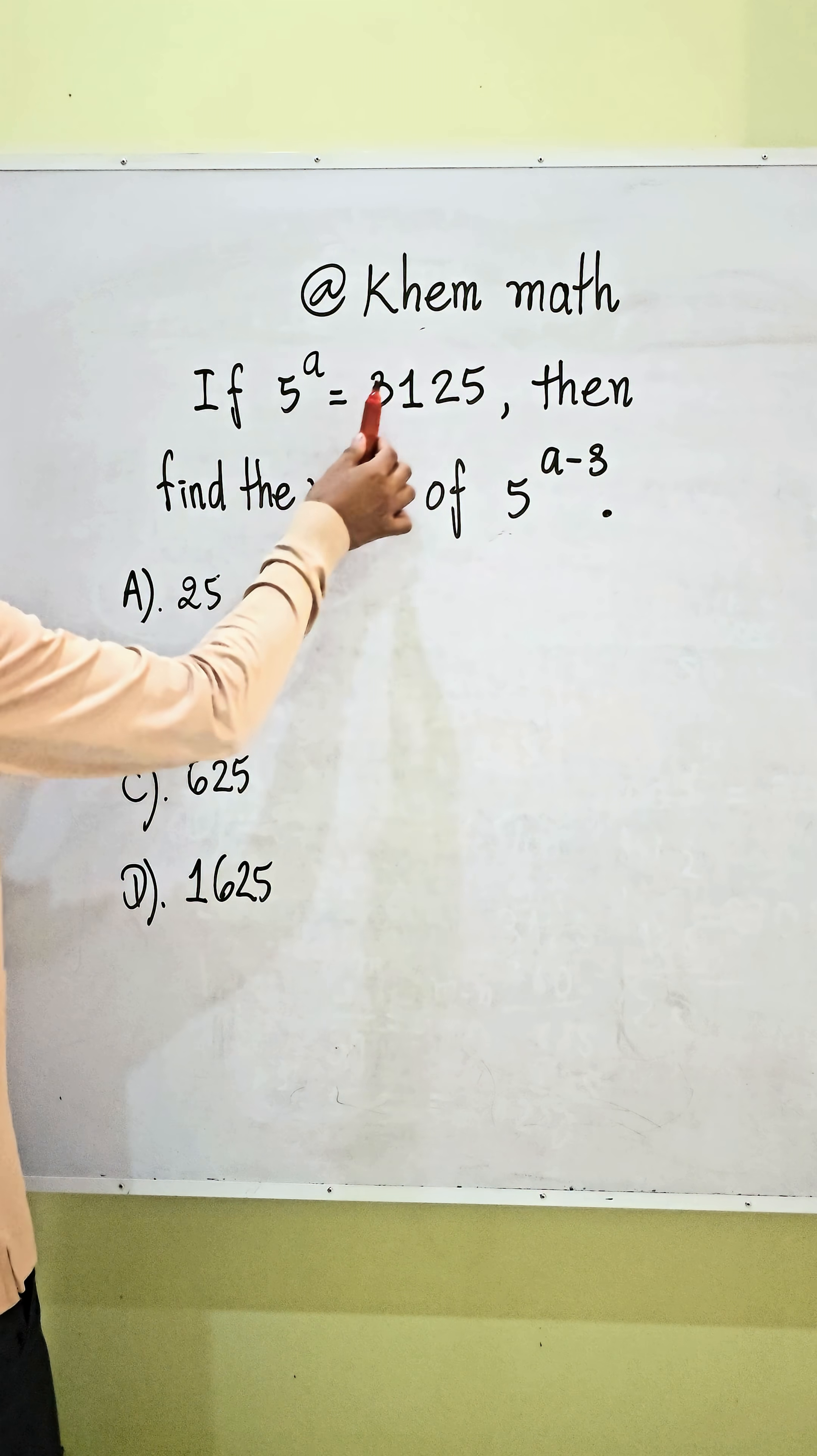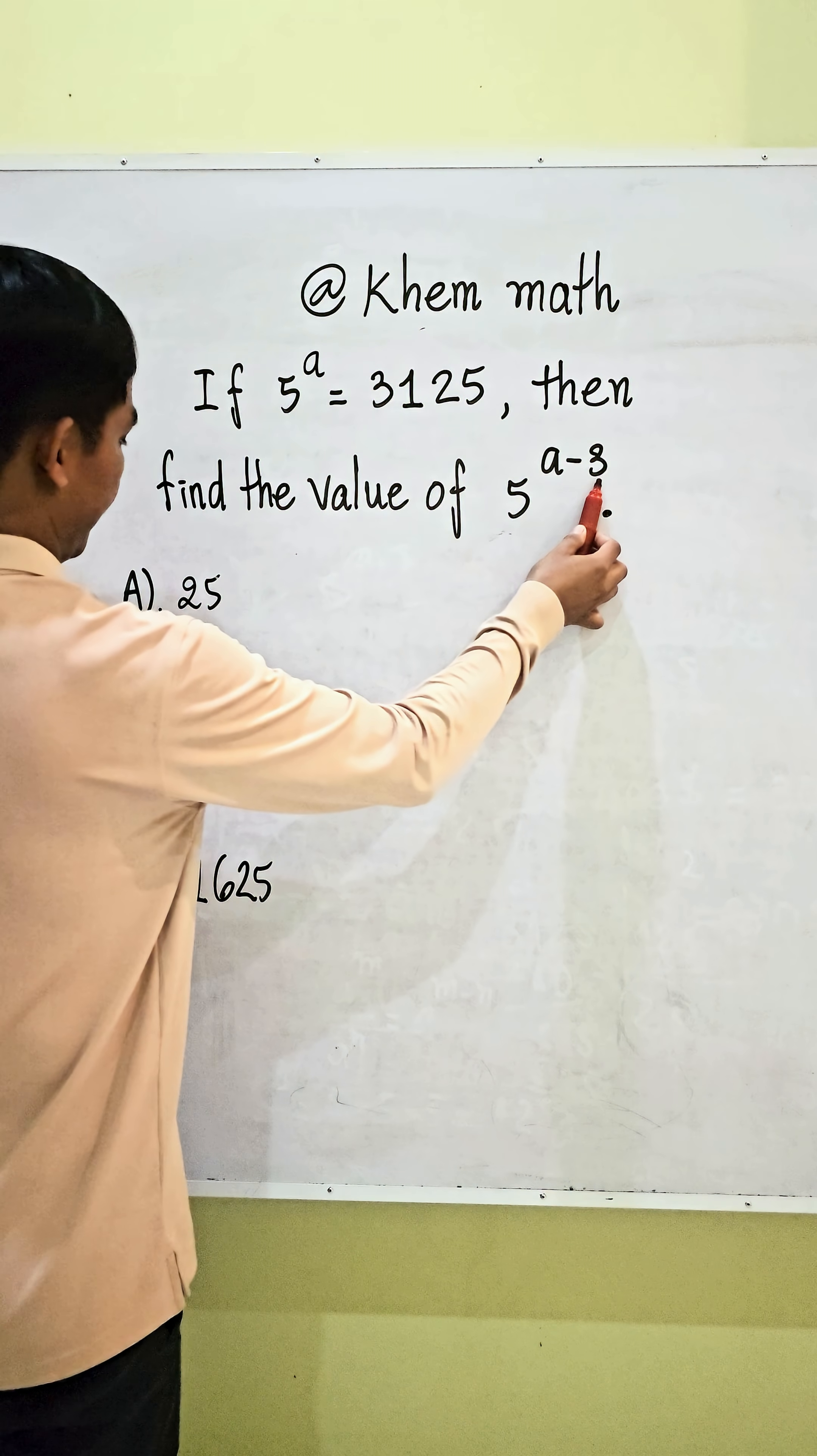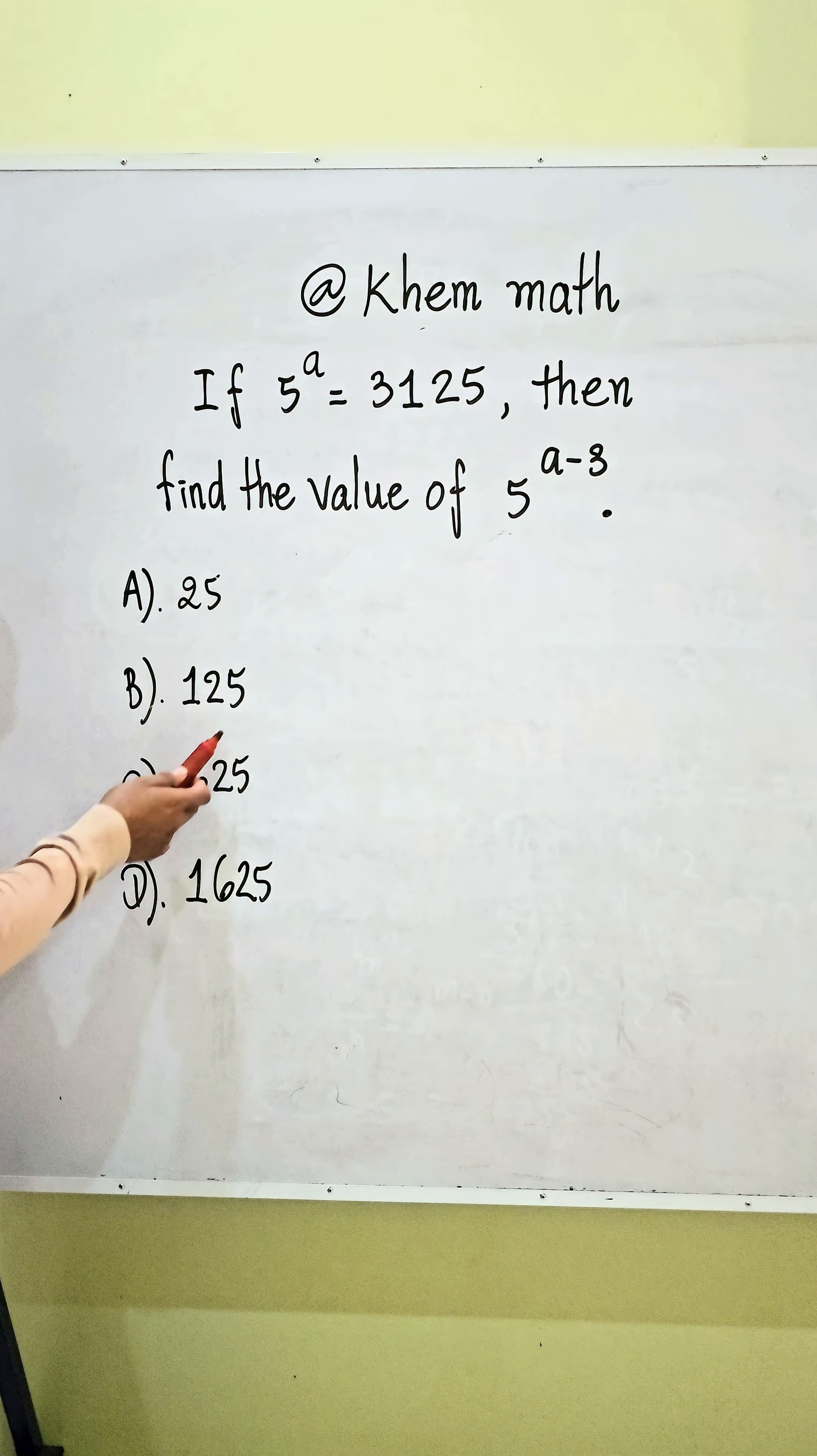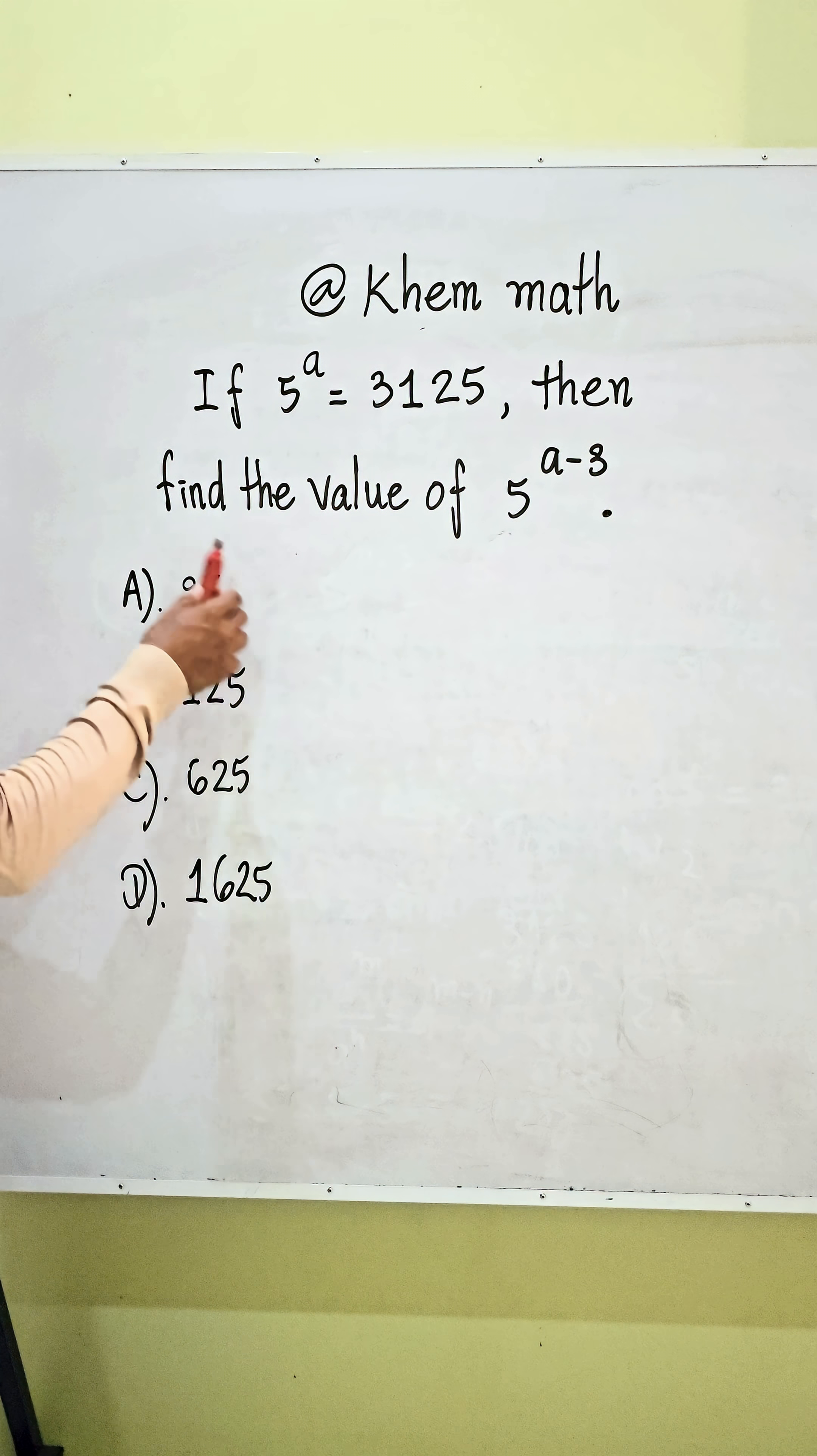If 5 power A equals 3,125, then find the value of 5 power A minus 3. Option A: 25, B: 125, C: 625, D: 1,625. Which one will I answer?